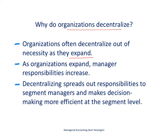This applies to for-profit companies, non-profits, colleges, and many other types of organizations. As organizations expand, managers' responsibilities increase, and that creates real inefficiencies. These types of organizations tend to decentralize, spreading out responsibilities to segment managers. Those segment managers then handle decision-making, which is much more efficient than having one manager overseeing many different operations spread throughout the world.